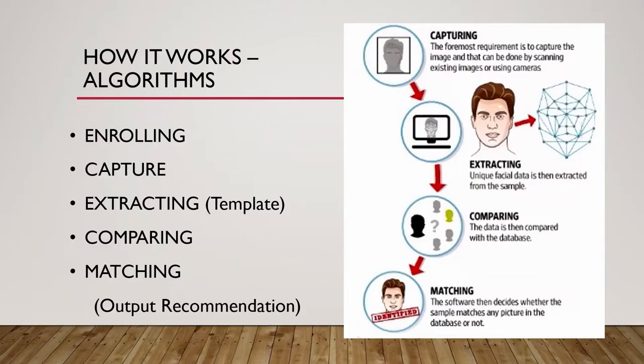I'm going to talk briefly about how the actual technology process works — Patrick will do a much more in-depth job, but a working knowledge helps when we get into the privacy conversation. Facial recognition involves comparing two images: one is the image you just collected, and the other is an image that already exists in a database. To get that image in the database, you have to have enrolled the person — via a mug shot, a driver's license photo, or employee registration.